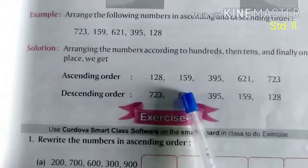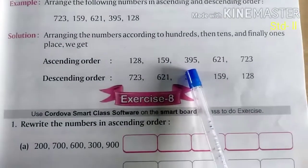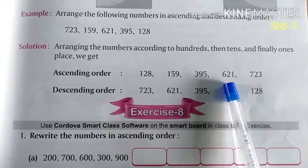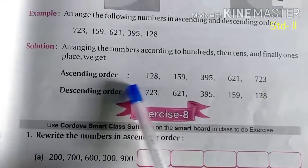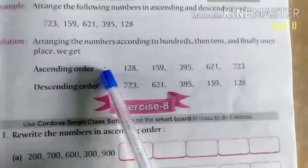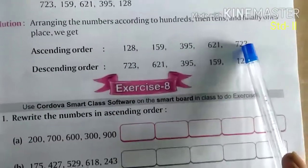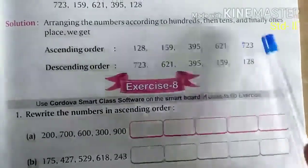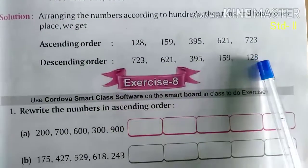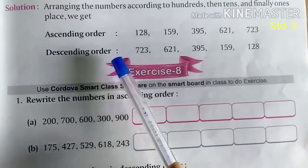then comes 159, then comes 395, then comes 621 and 723. In this order, if you write from the smallest to biggest, it is called Ascending Order. And descending order is right opposite, first biggest number, biggest to smaller. That is descending order. In the same way,